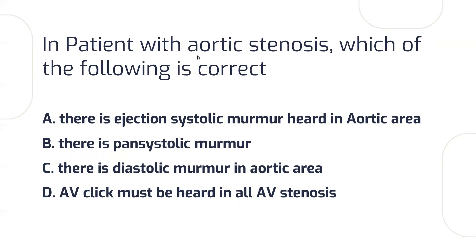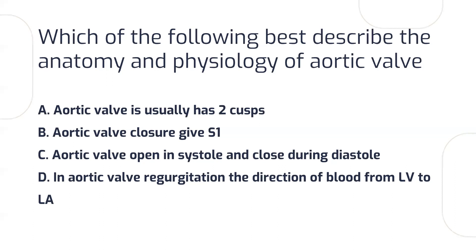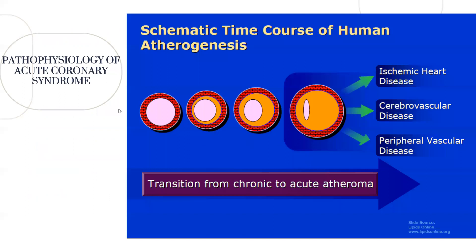In aortic stenosis and pulmonary stenosis, you will hear a systolic murmur heard in the aortic area. The first heart sound finding in the aortic area is a systolic murmur.